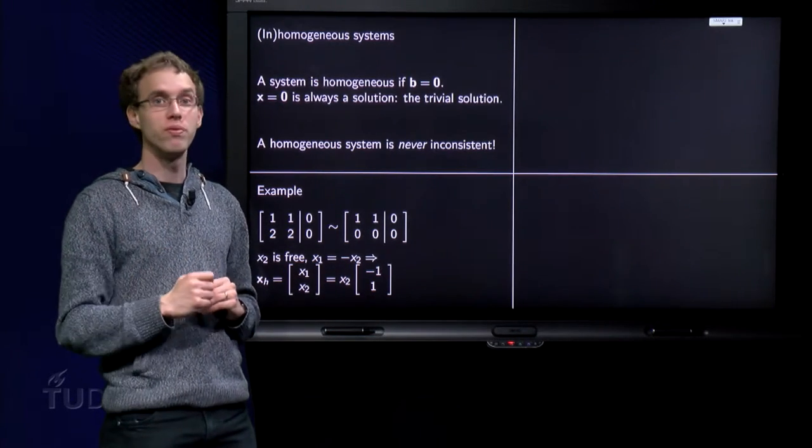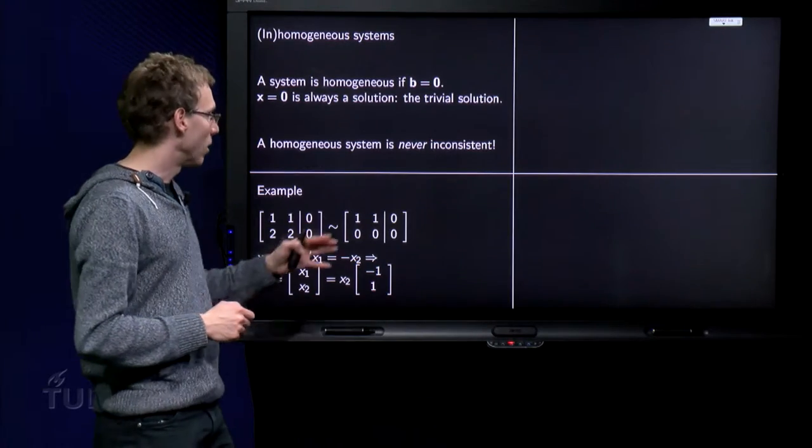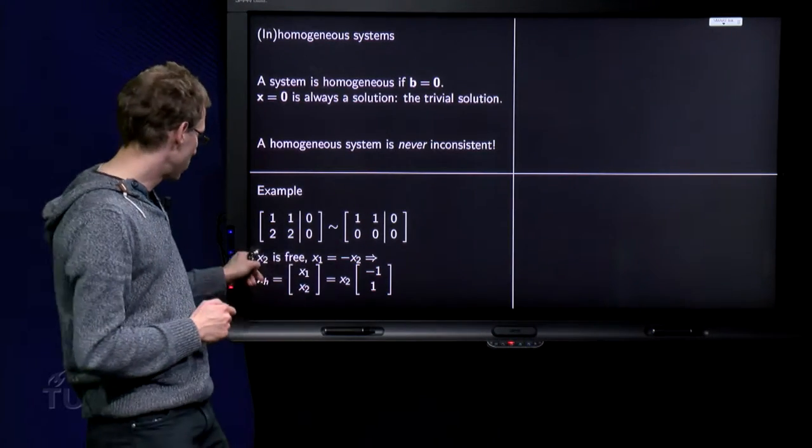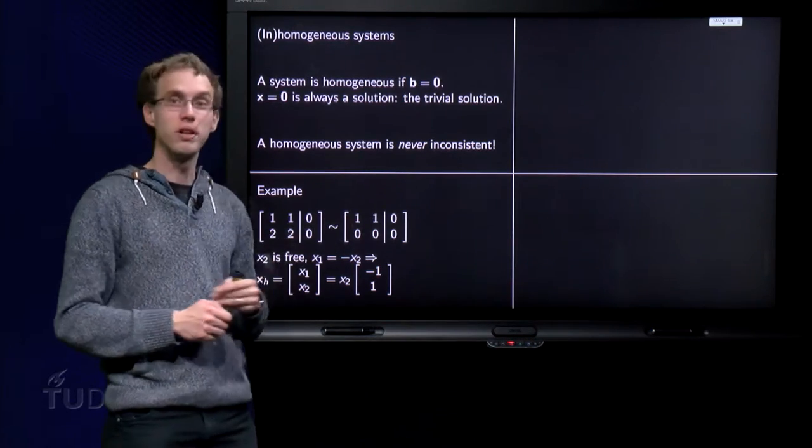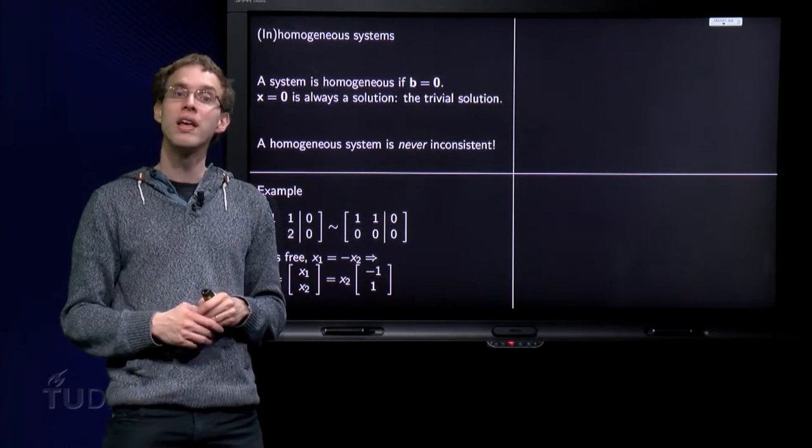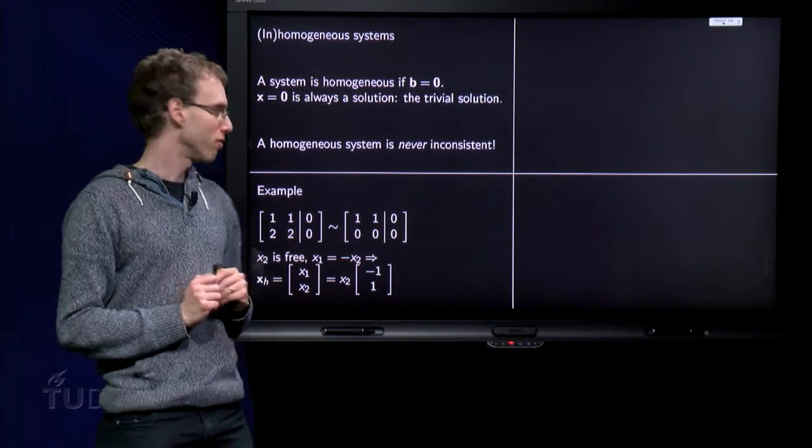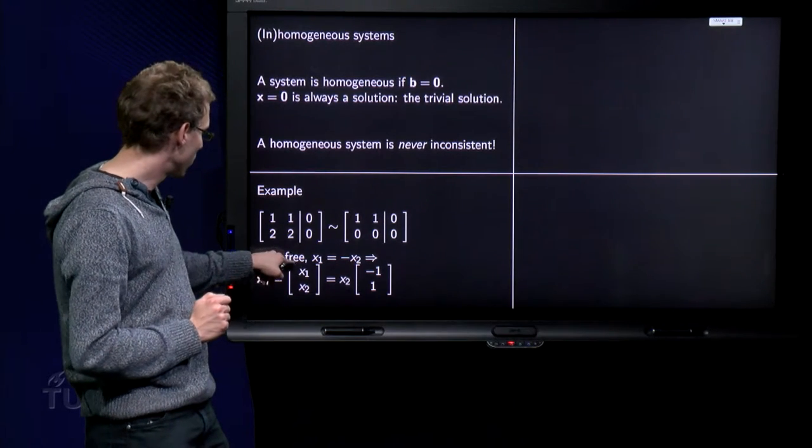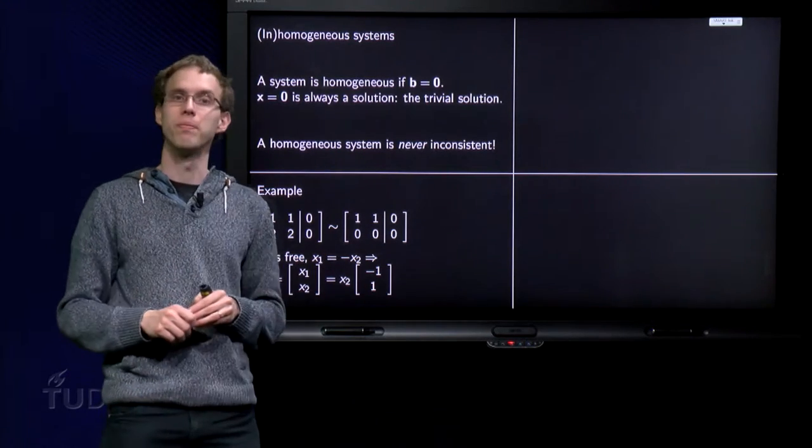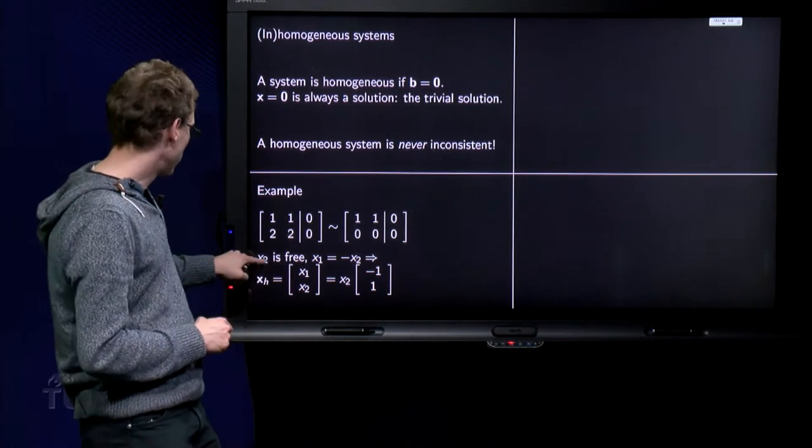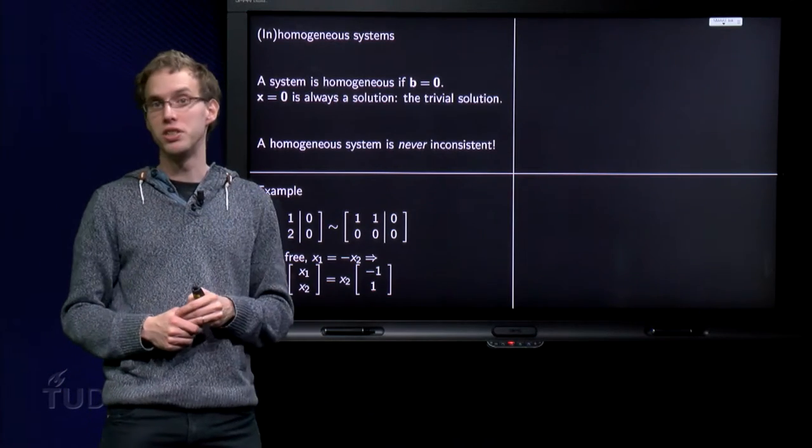We have one free variable. So, let us take for example x2 free. x2 is free. Then, from the first row we get x1 plus x2 equals zero. So, x1 equals minus x2. And we call this the homogeneous solution.